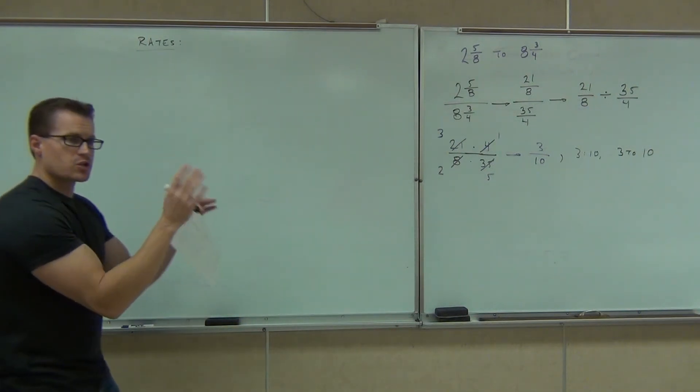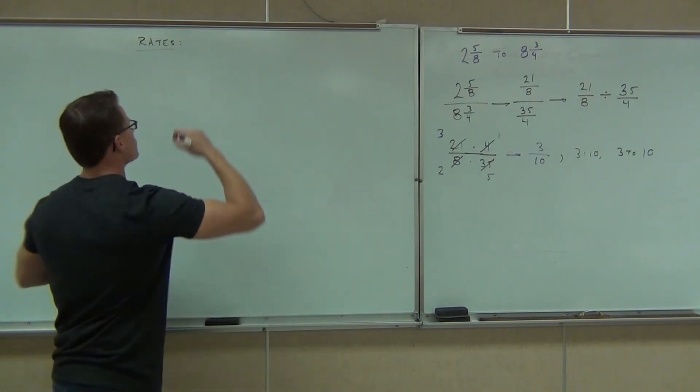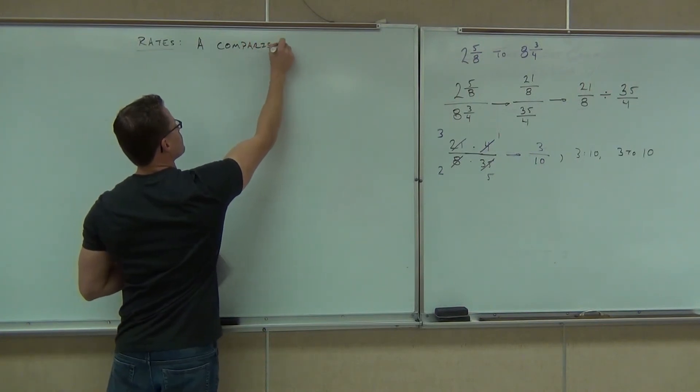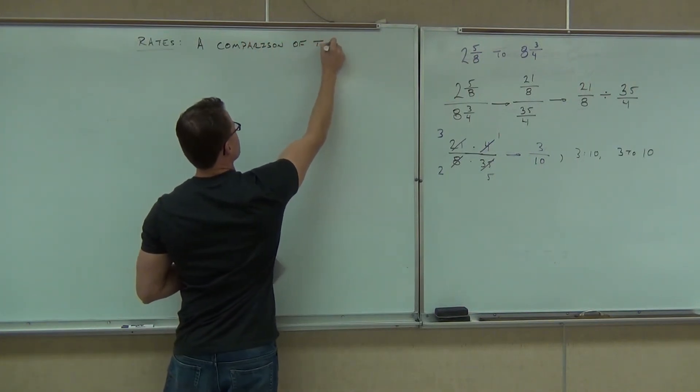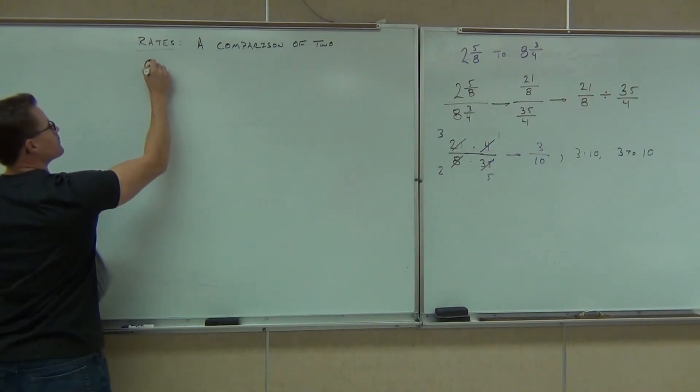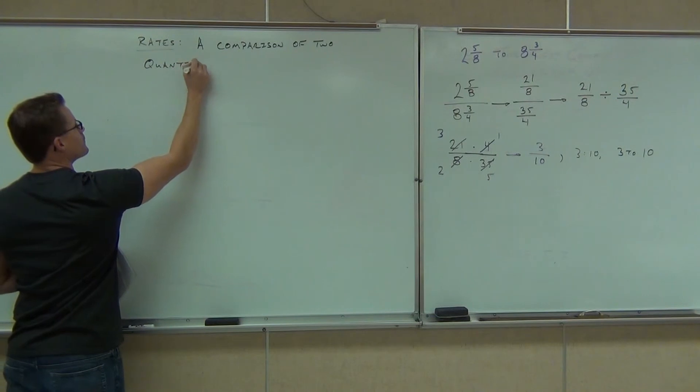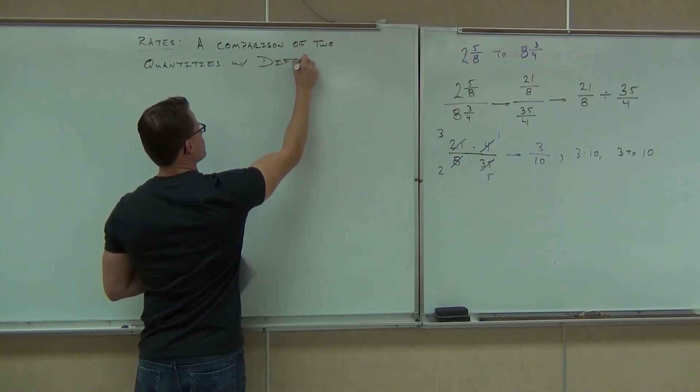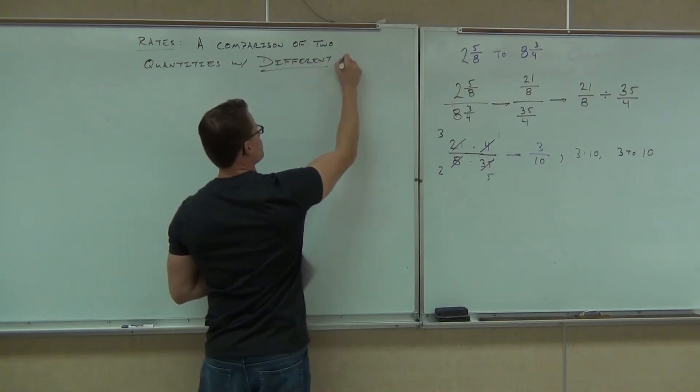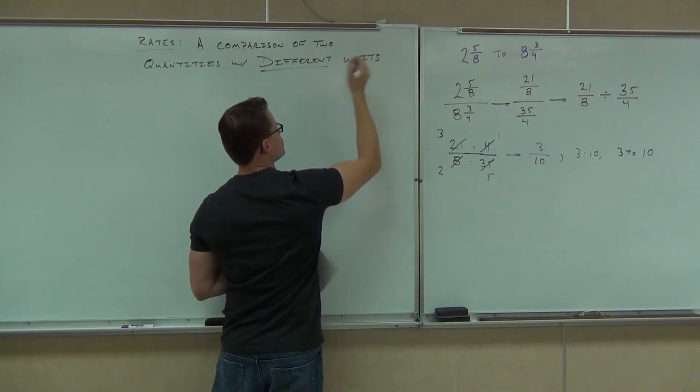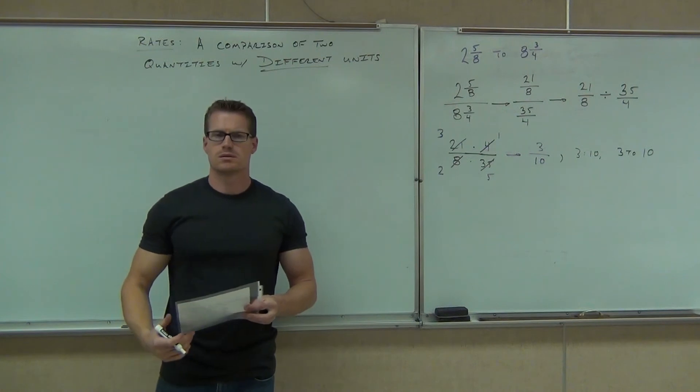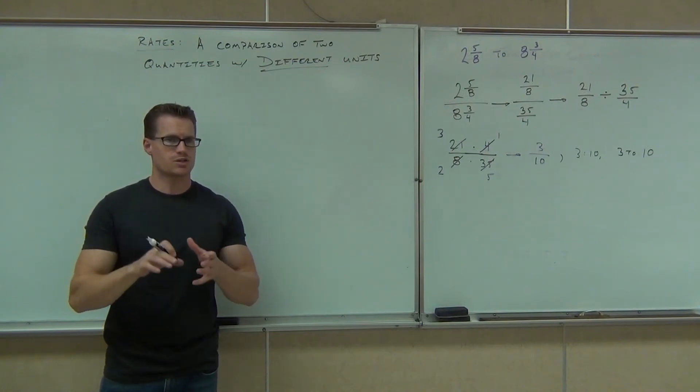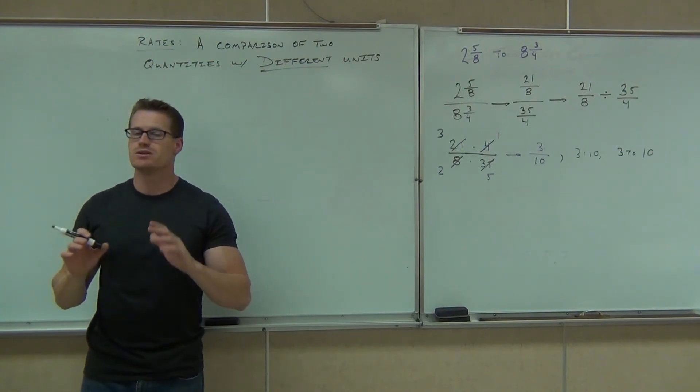So rates, just like a ratio, you're still comparing two quantities, but now they have different units. So you tell me, what's the only difference between ratios and rates? Different. The units. The units. That's it. In ratios, the units are the same. You don't have to write them. In rates, the units are different, and you do have to write them.